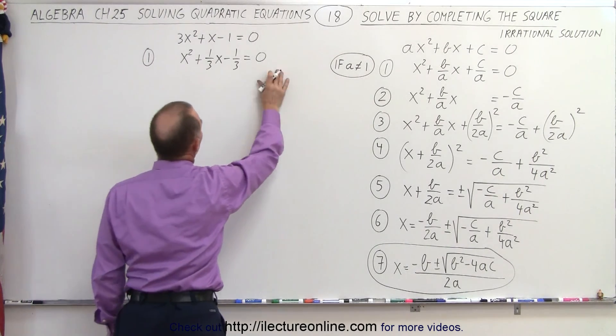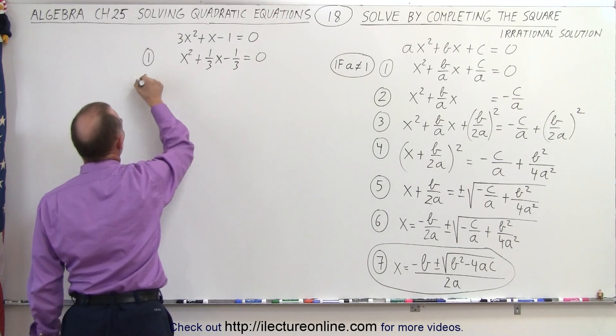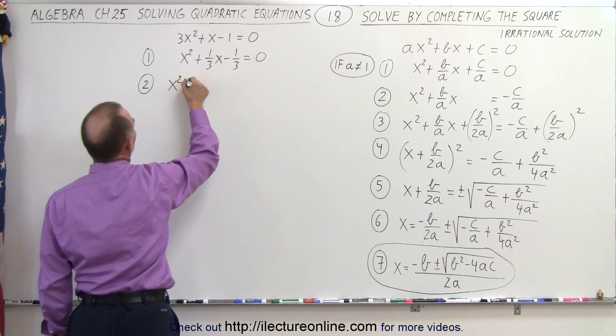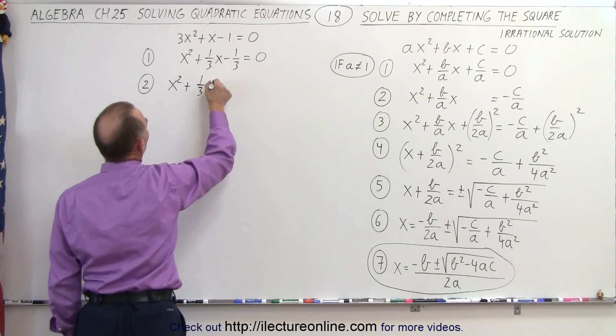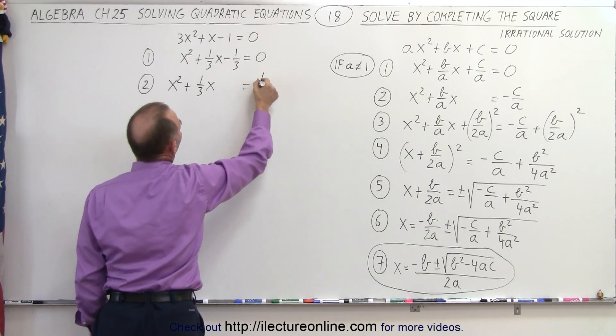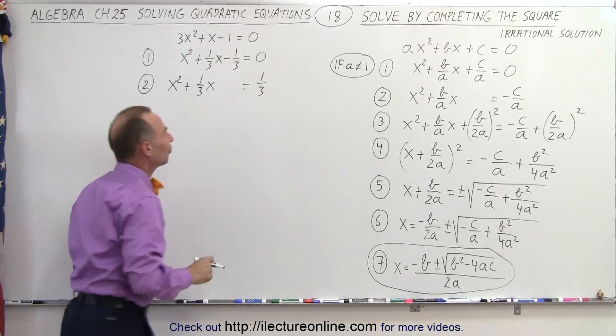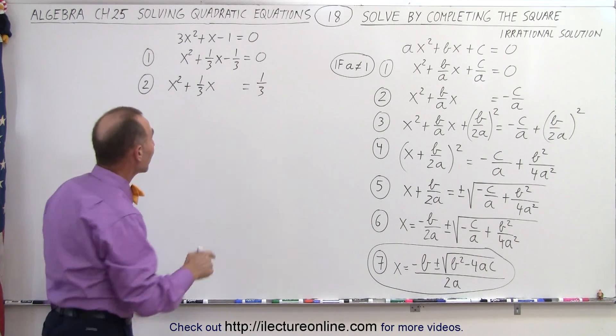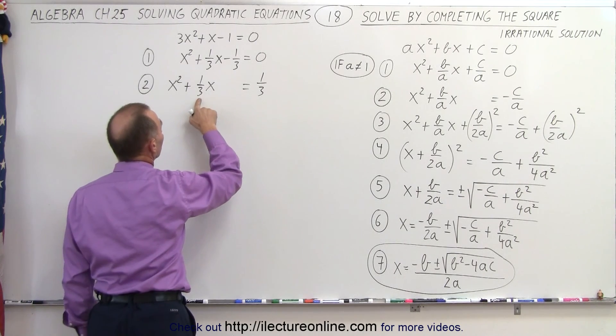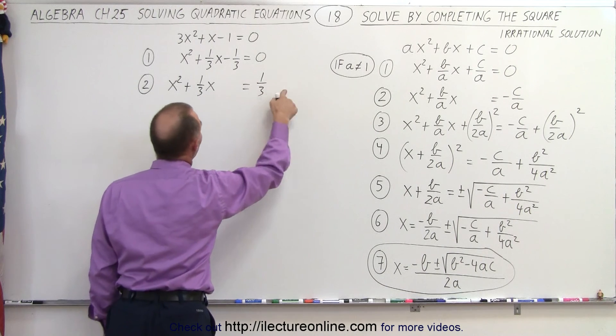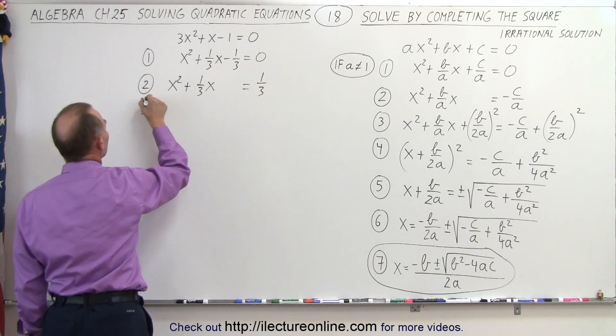Next, we want to move the constant term over to the right side. So that's step number 2. And I put x squared plus 1 over 3x is equal to a positive 1 over 3, because the sign changes when we cross the equal sign. And now we're going to take half the coefficient of the middle term, square it, and add it to both sides.